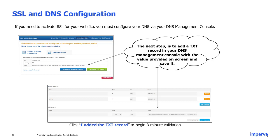Please see an example of how the DNS record is added in a DNS management console. Once you've added the TXT record with the values provided, you can then click 'I Added the TXT Record' to begin the three-minute validation process.